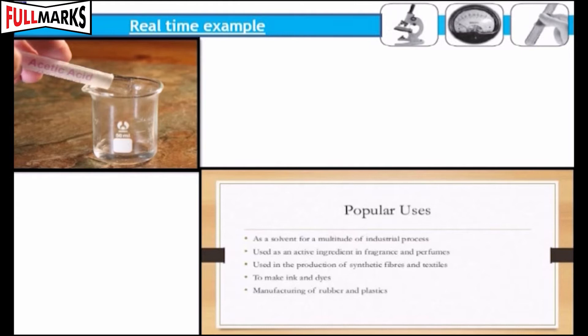Real-time example: 5-8% solution of acetic acid in water is called vinegar. It is used as a food preservative and in food flavorings. Acetic acid is used as a coagulant in the manufacture of rubber.